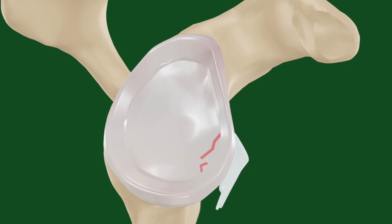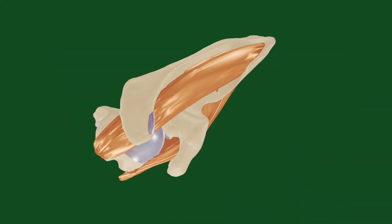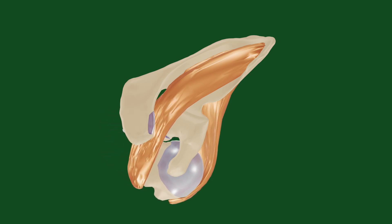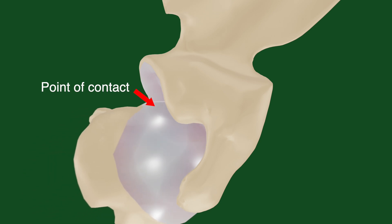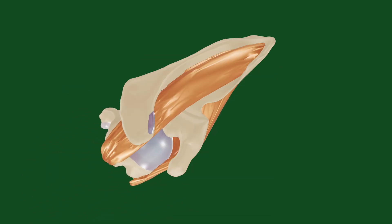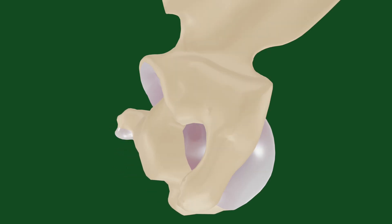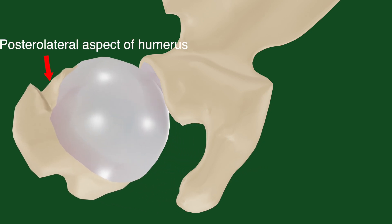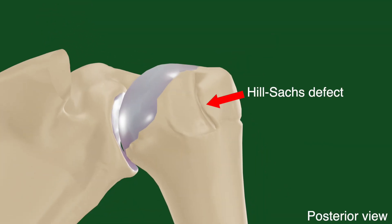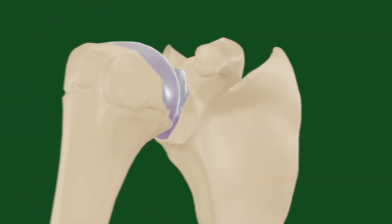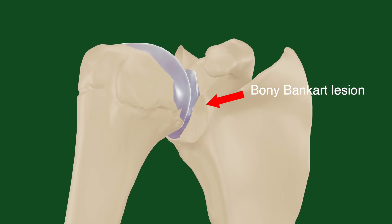Moving on to the bony lesions relating to traumatic anterior shoulder dislocations: recall that when the humerus is dislocated anteriorly, it is also pulled medially, creating a strong point of contact between the two bones. Also remember that the humerus tends to be externally rotated as it dislocates anteriorly. Therefore, the site of contact is usually on the posterolateral side of the humerus as well as the anterior part of the glenoid. The bony defect on the posterolateral side of the humerus is referred to as a Hill-Sachs defect, whereas the bony defect on the anterior glenoid is referred to as a bony Bankart lesion, at the same site as a normal Bankart lesion.